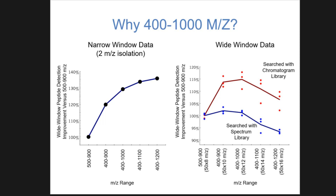Looking at real narrow window data — 2 MZ wide isolation — I built this by adding more and more acquisitions: four injections, five, six, seven, eight injections to build up the precursor range. Normalized to the 500 to 900 range, we do see an increase in the number of peptides detected as you increase the range size. You get a bump from 400 to 1000 versus 400 to 1200. The extra interference from having wider precursor isolation windows actually hurts you in the end, and the sweet spot we find is the 400 to 900 or 400 to 1000 range.